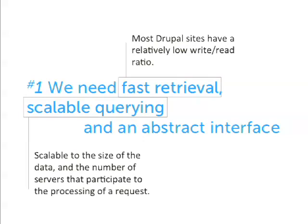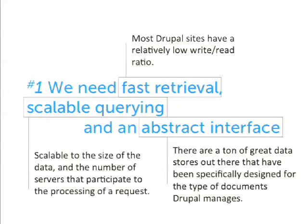The third thing we need in terms of document storage is an abstract interface. Why? Because there are a ton of great data stores out there specifically designed for exactly what we're looking for — the type of document we manage. I'm thinking about MongoDB, CouchDB, many of the NoSQL databases, especially those that can actually store documents. We should be able to use them and not be stuck in SQL.